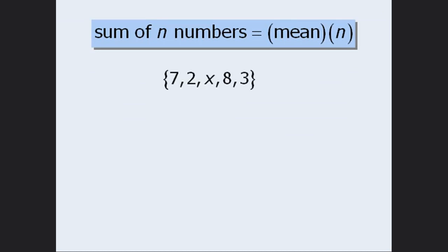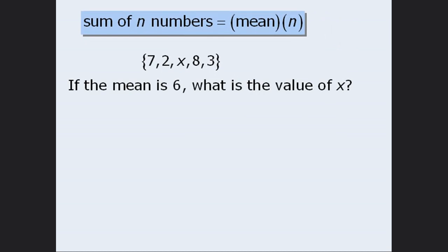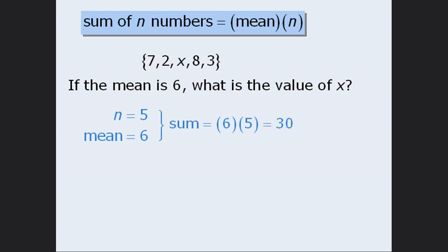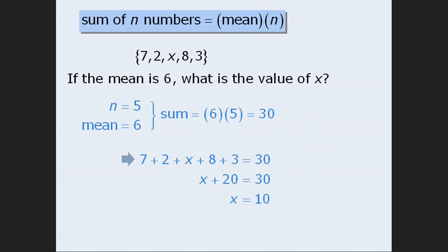Let's apply this formula to a question. Here we have a set of values where one of the numbers is the variable x. If we are told that the average of the five numbers is 6, then what is the value of x? Notice that if we find the sum of all five numbers in this set, then we can determine the value of x. In this set, n equals 5, and the mean is 6. When we apply our formula, the sum of the numbers equals 6 times 5, which is 30. So if the sum of the five numbers is 30, we can write an equation and solve for x, giving us x equals 10.